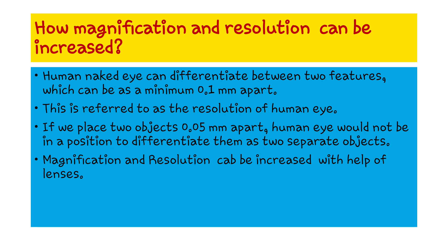Resolution can be increased. The human naked eye can differentiate between two features that are a minimum of 0.1 mm apart. If two objects are placed less than 0.1 mm apart, the human eye would not be in a position to differentiate them. Magnification and resolution can be increased with the help of lenses — that is, a microscope.